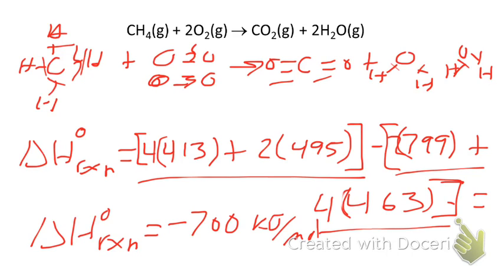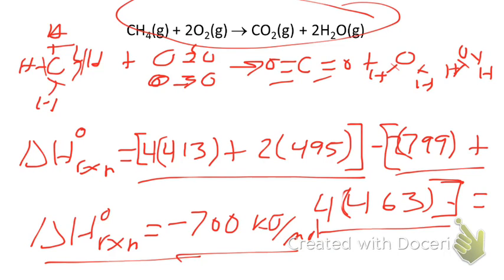A lot of energy comes out of that combustion reaction, and a negative delta H means this is an exothermic reaction — which is no surprise for combustion. Bond enthalpies are another way, besides calorimetry, to determine the amount of potential energy change for a reaction. You have two more problems in your notes — work those out on your own and we'll check the answers in class. Get ready for a quiz over this material.